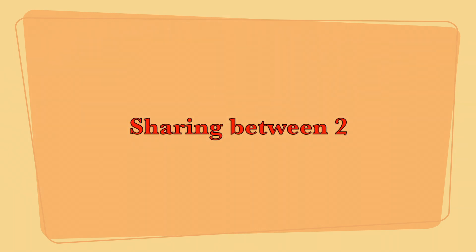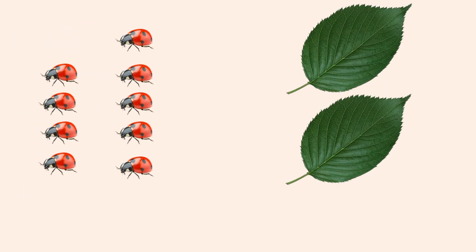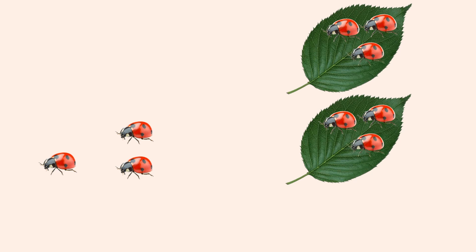Sharing between two. We have ten ladybugs and two leaves. We are going to share the ten ladybugs equally between these two leaves. So let's start: one, two, three, four, five, six, seven, eight, nine, ten.